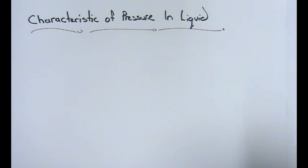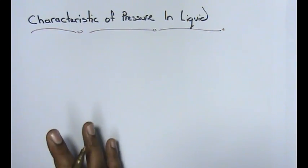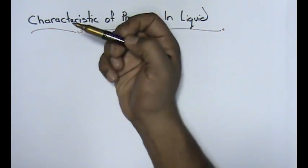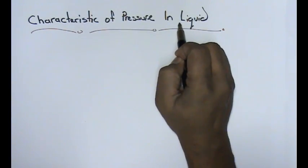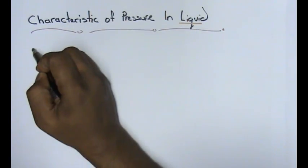Now guys, there are six characteristics of pressure that you need to understand. These are the golden rules for pressure in liquid. We are talking only about liquid.